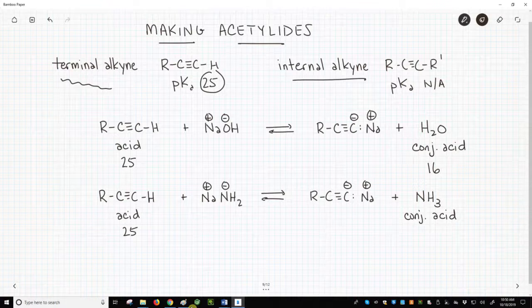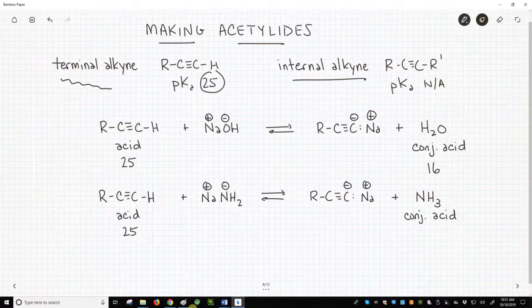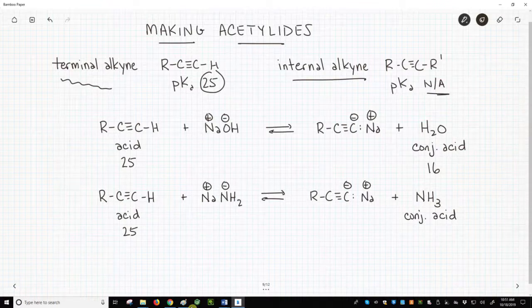So-called internal alkynes, in which we have an R group or multiple R groups on the ends of the alkyne, these do not have any CH groups and therefore are not nearly so acidic. So this is not applicable for acidity.